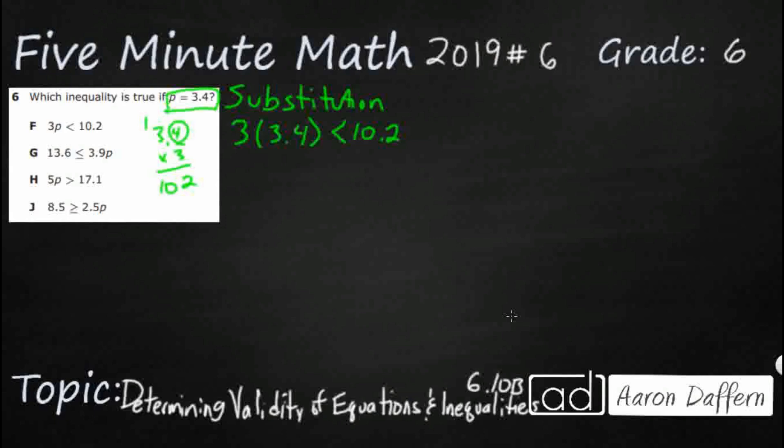We have one digit behind the decimal in the factor, one digit behind the decimal in the product. So it's 10.2 is less than 10.2. Oh, you see, it's equal, not less than. So that is going to be a no, simply because the numbers work. The sign does not.